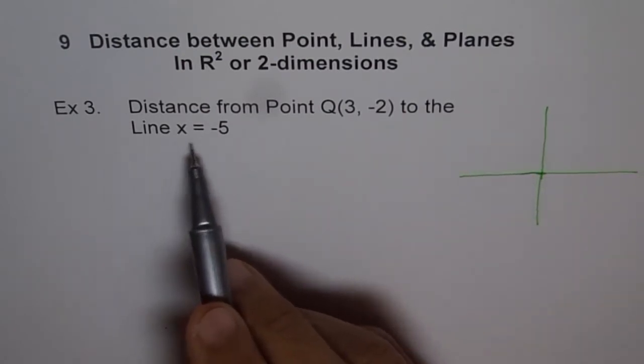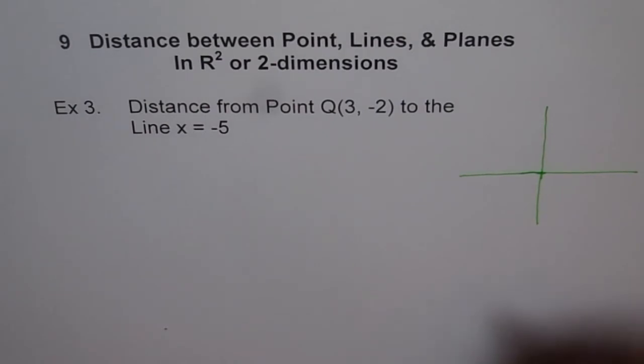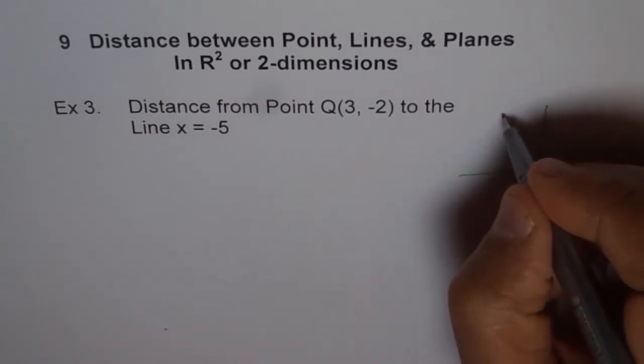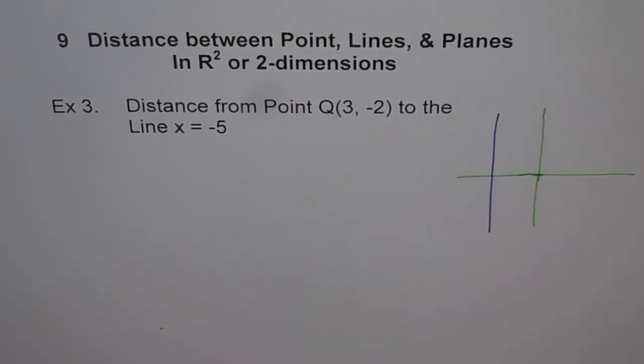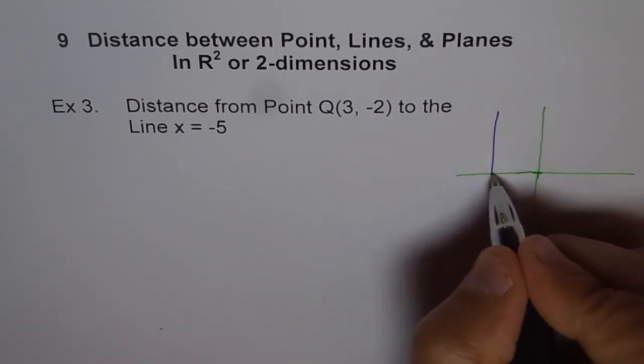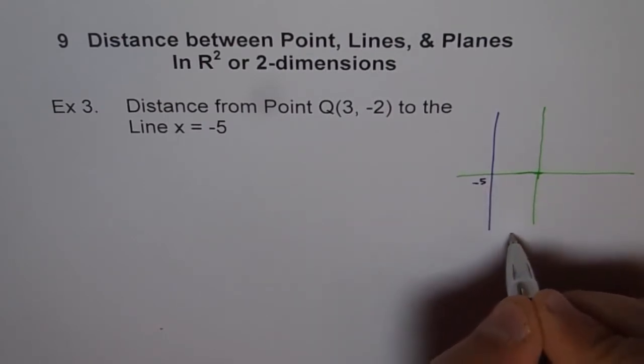So when I say x equals to minus 5, that means that my line is a vertical line like this, right? And the point here is minus 5. This point here, x intercept is minus 5. And that's my line, x equals to minus 5.